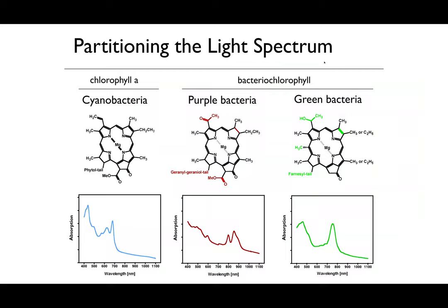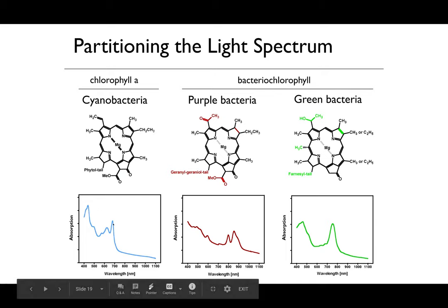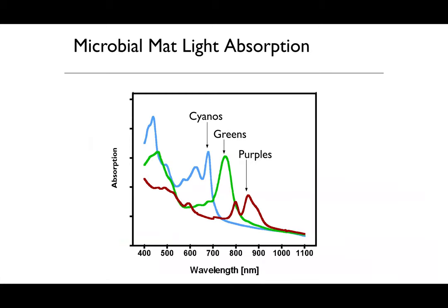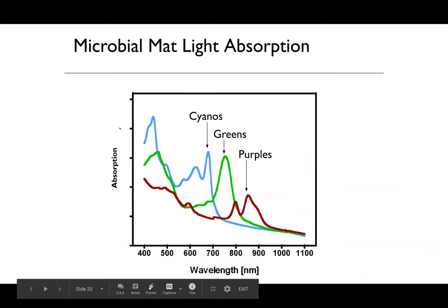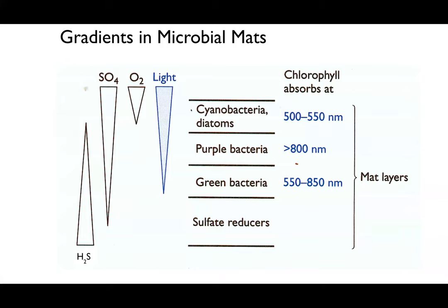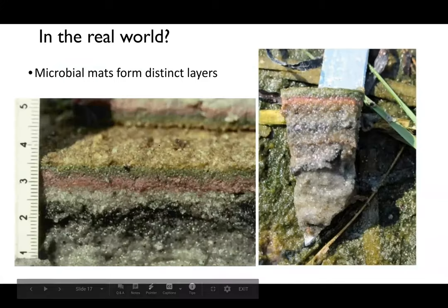We can look at partitioning of the light spectrum: chlorophyll a in cyanobacteria has two distinct absorption peaks around 400–500 nm and again at higher wavelengths; purple bacteria absorb light at much longer wavelengths; and green bacteria absorb light both early and later in the spectrum as well. They partition not only space but also the light spectrum, and you can physically see how these very distinct absorption patterns lead to the distinct layering we observe in microbial mats.